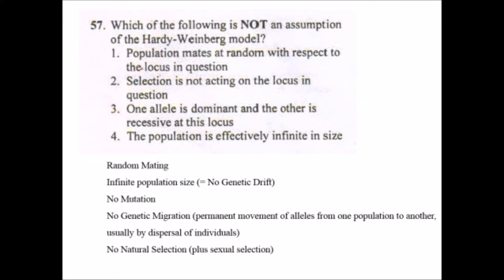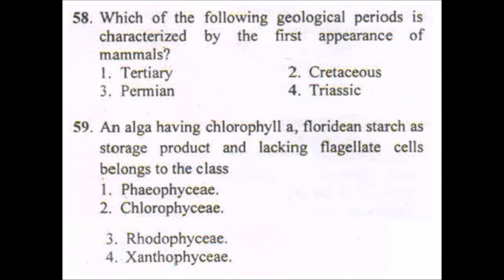Which of the following is not an assumption of Hardy-Weinberg model? Actually there are five assumptions of the Hardy-Weinberg model: these are random mating, infinite population size, no mutation, no genetic migration or we can say no permanent movement of alleles from one population to another, and there should be no natural selection. Then only we can apply the Hardy-Weinberg model.